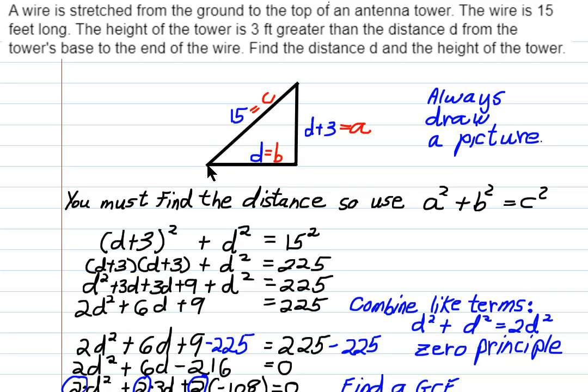So here we have a right triangle. There's a 90 degree angle here. This is distance d. This is distance d plus 3. And we're given that the wire, which is the hypotenuse of the right triangle, is 15 feet long.